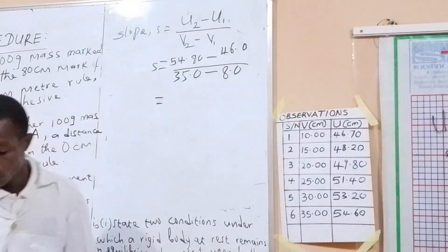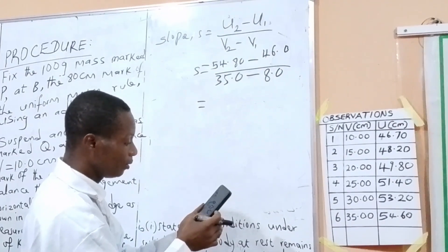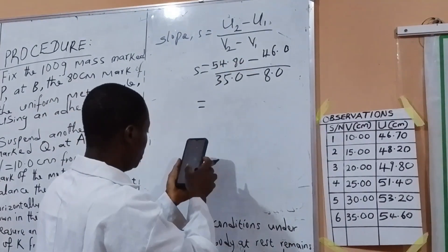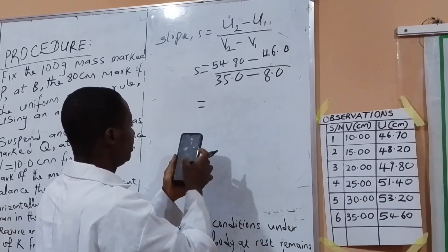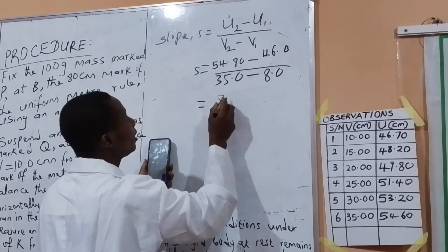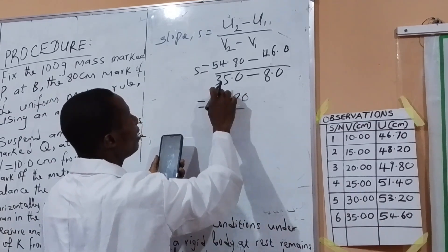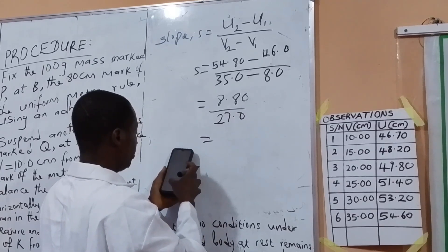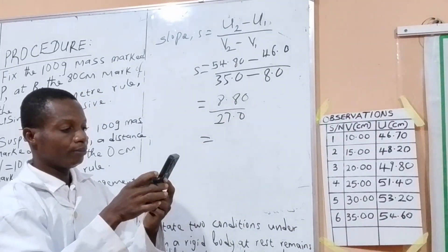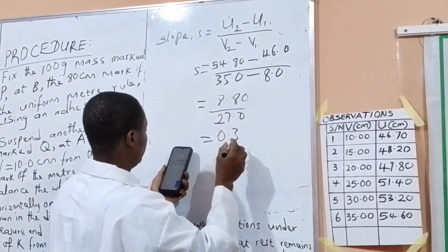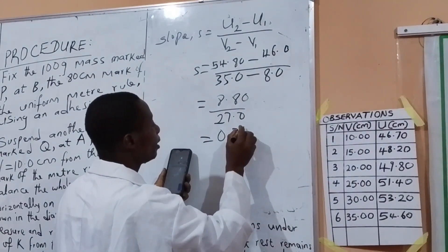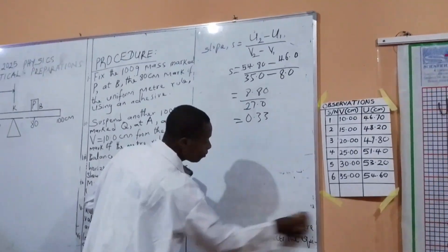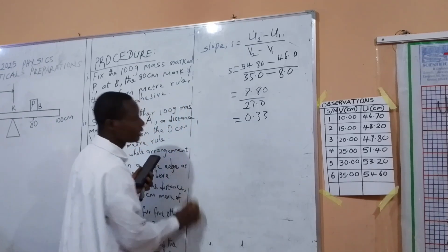This is how we get our slope. Use your calculator: 8.8 divided by 27.0 is 0.32, or we can call it 0.33. So the slope is 0.33. Remember the slope has no units, because the cm in U will cancel the cm in V.